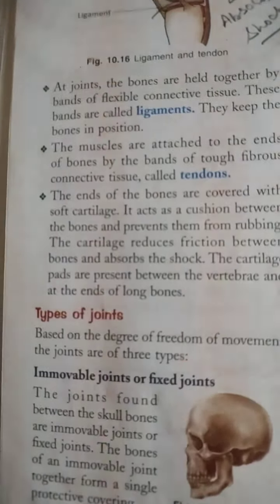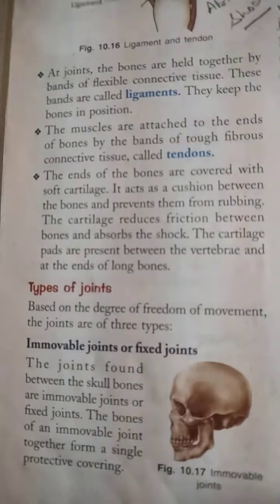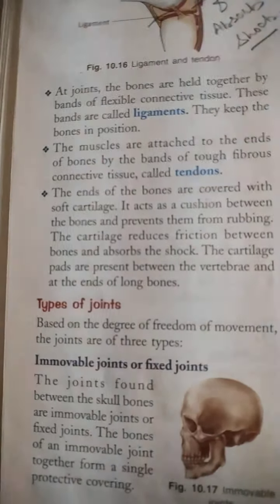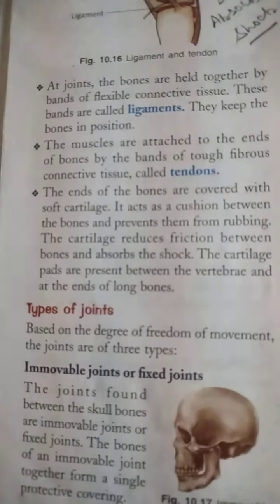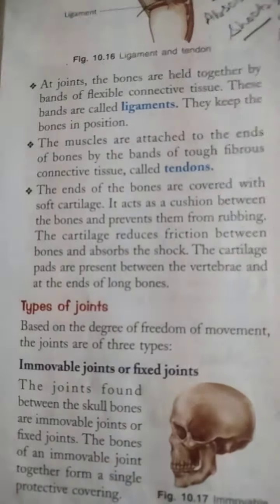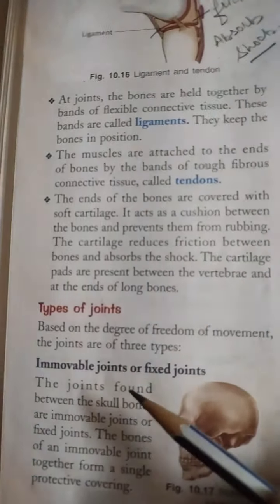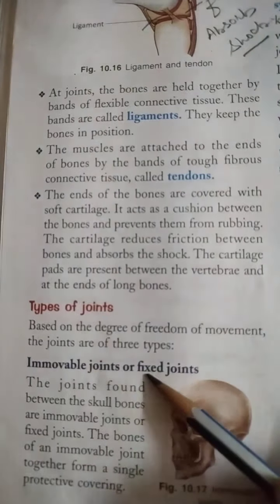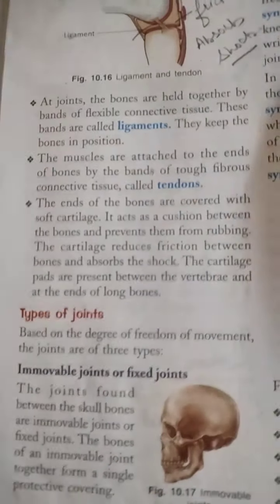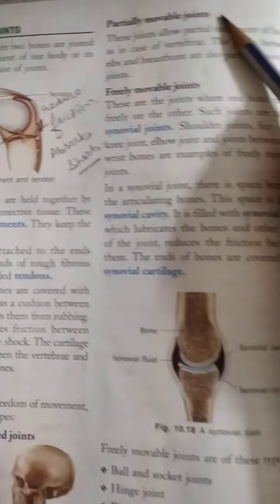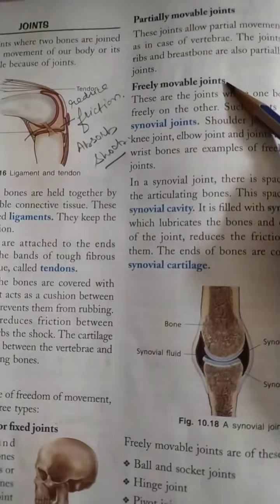Now, types of joints. Basically, joints are of three types depending upon their movement: immovable joints or fixed joints, partially movable joints, and freely movable joints.